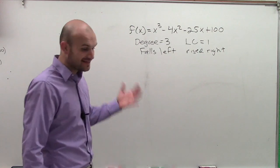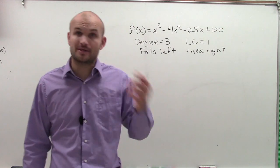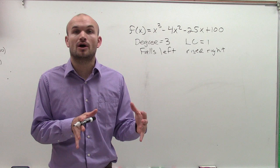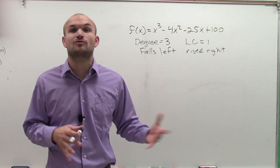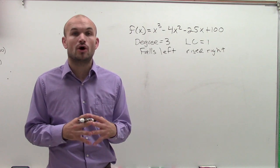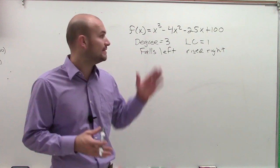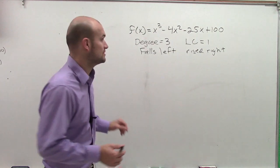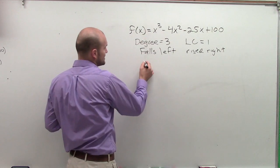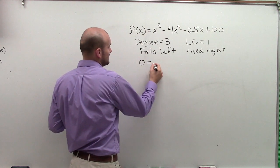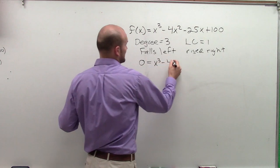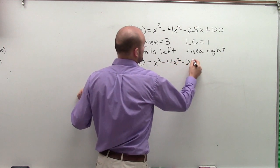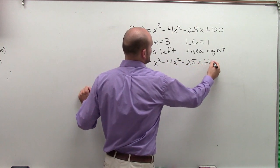So here we go. Now the next thing we need to do is determine the zeros. So what I'm going to do is remember the zeros are your x-intercept, where your graph crosses the x-axis. Therefore, we know that y is equal to zero. Or in this case, since we're talking about a function, f of x, our output, is going to be equal to zero. So we're going to set zero equal to our f of x, which equals x cubed minus 4x squared minus 25x plus 100.